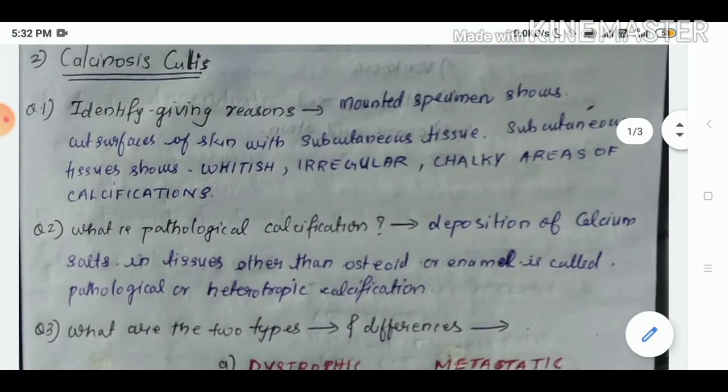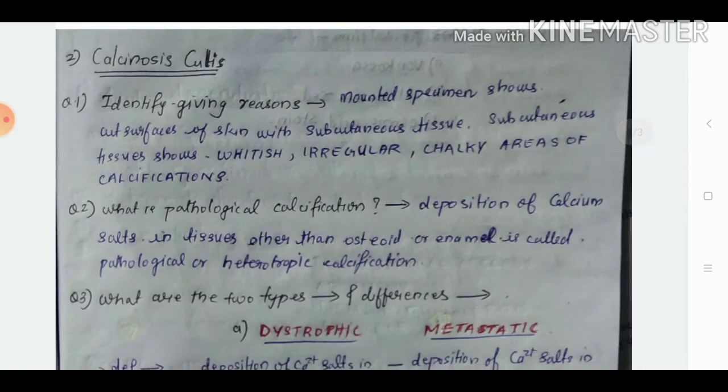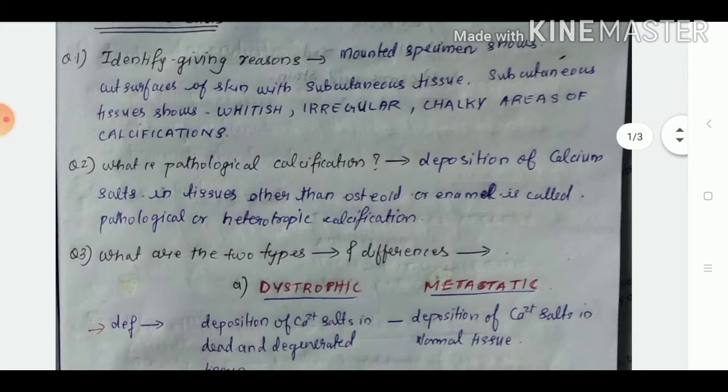What are the things we should keep in mind when studying calcinosis cutis? To identify the mounted specimen, it shows cut surfaces of skin with subcutaneous tissue. The subcutaneous tissue shows whitish irregular chalky areas of calcifications.